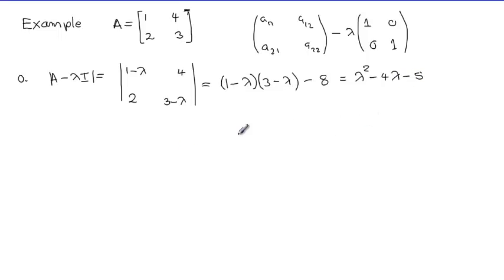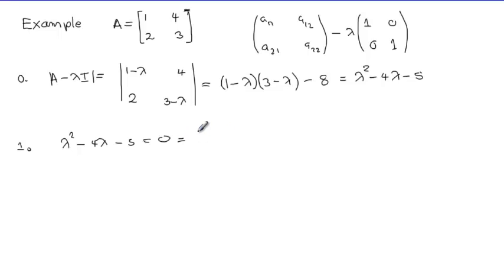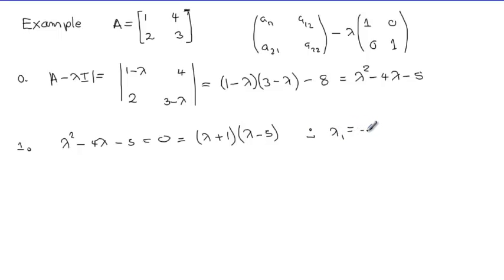That's our characteristic polynomial. Then we set up the characteristic equation: λ² − 4λ − 5 = 0. This factors as (λ + 1)(λ − 5) = 0. Therefore our eigenvalues are λ₁ = −1 and λ₂ = 5.